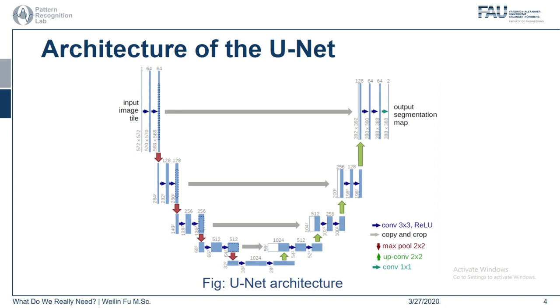Comparably, in this work, we start with a three-level UNET, and it contains around 100,000 parameters.